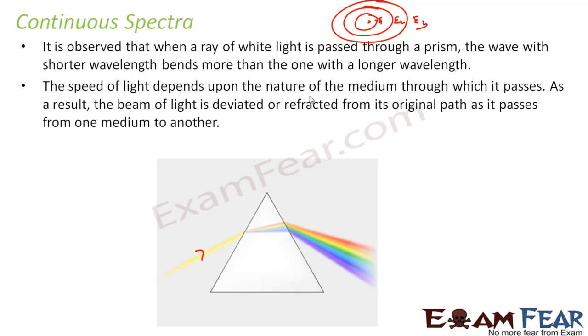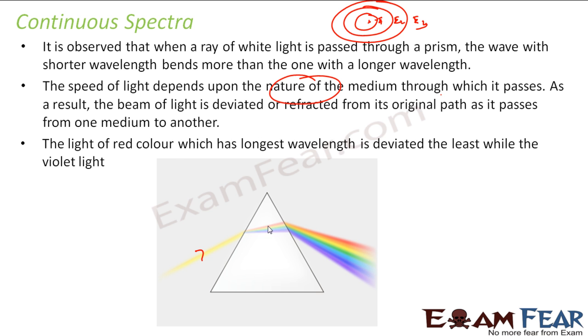Because if you see the speed of light depends on the nature of the medium it passes. As a result, the light is deviated or refracted from the original path when it passes through. So, the light of red color, which has the longest wavelength, is deviated the least. And the light of violet is deviated the maximum. And that is the use of prism, actually.